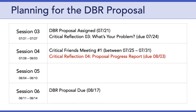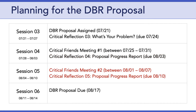After that, on Monday, August 3rd, you are going to submit your fourth Critical Reflection, which is simply going to be a progress report on what you've accomplished related to your proposal. Then again in session five, we're going to do the same pattern — you'll schedule a second Critical Friends meeting, and then you'll have Critical Reflection 5 due, which is another progress report, due on the 10th. In session six, the focus will be entirely on wrapping up your DBR proposal. I'll be assigning specific readings each week to help you move through the process of creating your proposal.